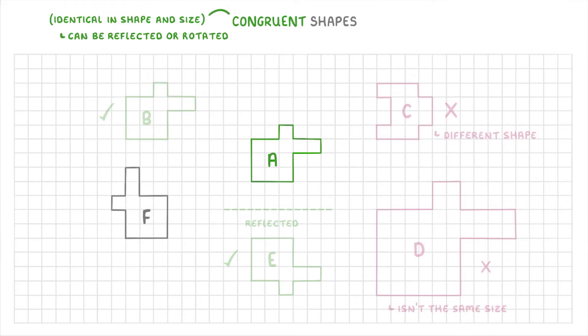And finally, our last shape, F, also looks a bit different at first, but that's just because it's been rotated 90 degrees counterclockwise. It's still the same shape and size, so it is congruent to A.